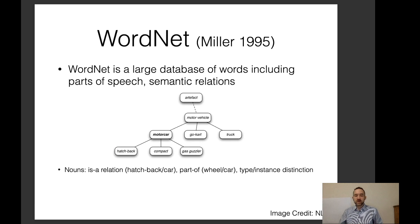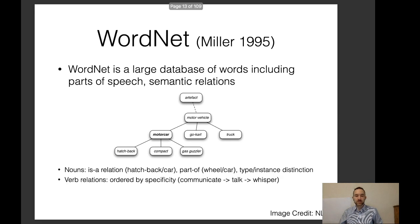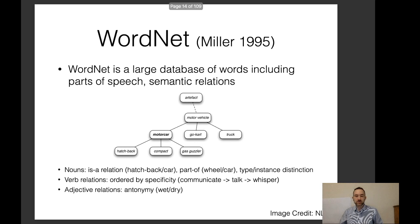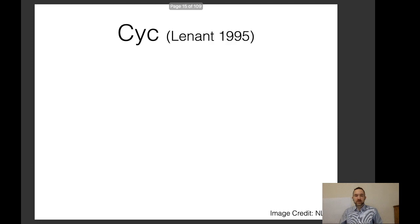There's also a type and instance distinction: a hatchback could be a type of car, but the specific hatchback I own or one that appeared in a movie would be a specific instance. There are also verb relations ordered by specificity — communicate, talk, whisper — and adjective relations like antonyms, such as wet and dry. WordNet is a very expansive lexical database of English, but it's limited in that it's mainly focused on English words only.